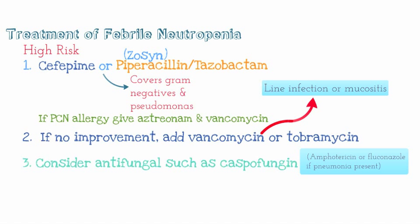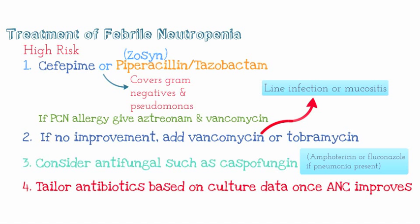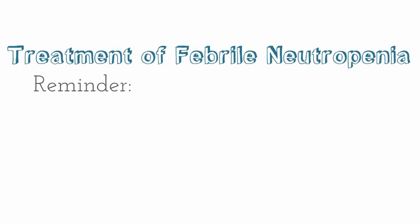If the patient has pneumonia, you may want to consider amphotericin or fluconazole. Keep working down the list of antibiotics and antifungals based on whether the patient is improving. Most importantly, tailor antibiotics based on culture data — you don't want to keep them on broad-spectrum for too long if they're improving. Once the ANC improves, consider transitioning from IV antibiotics to oral antibiotics.